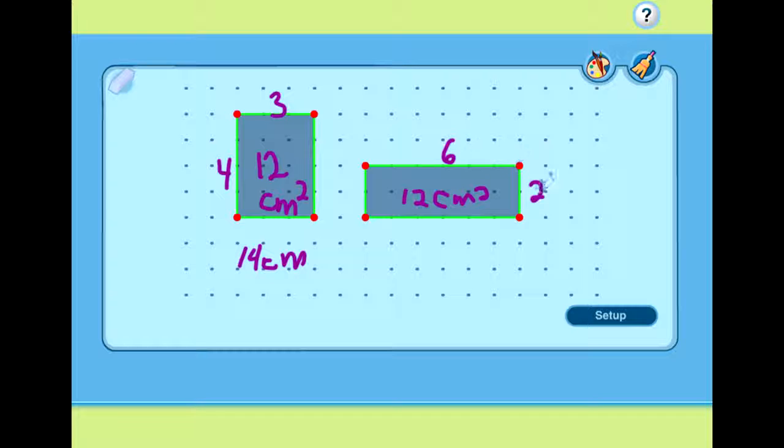What is it going to be on the outside, the perimeter? 6 plus 2 plus 6 plus 2. 6 plus 6 is 12, 13, 14, 15, 16. It would take me 16 centimeters to go around that box.